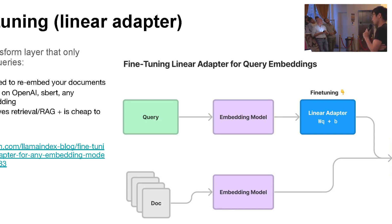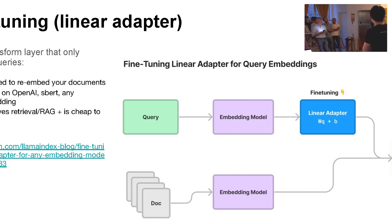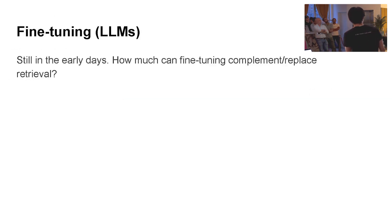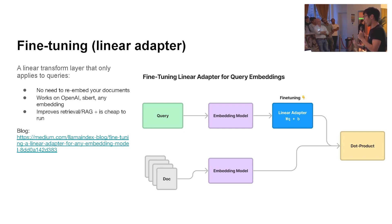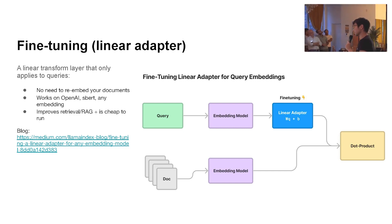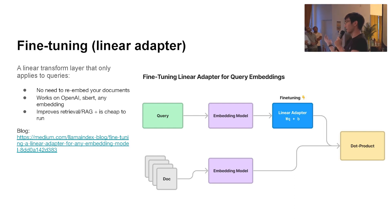There's an idea inspired by Joe from Vespa: you can fine-tune some sort of adapter on the query and just keep the document embeddings frozen. It's basically just a transform layer that only applies to queries. You pass both the query and document through an embedding model, do a linear transformation of the query embedding before computing the dot product similarity. We just put out a blog post about this two days ago — this allows you to not have to re-embed any of your documents, works on top of any embedding model because it's just a linear transform, and will improve retrieval RAG performance.